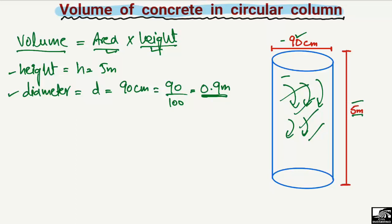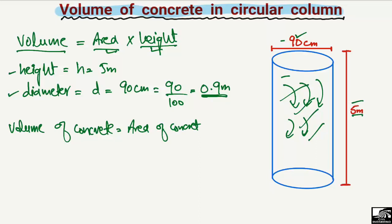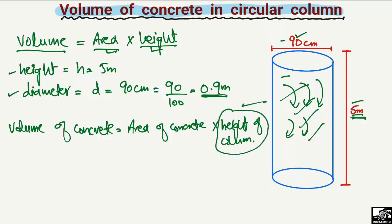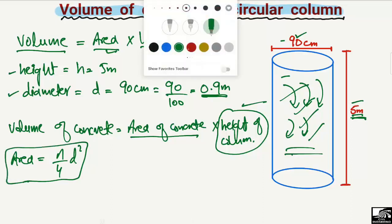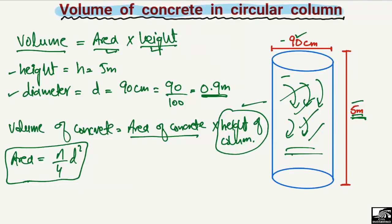Now, the volume of concrete will be equal to the area of the concrete in the column multiplied by the height of the column. The height of the column is 5 meters. To find out the area of the concrete in this circular column, the area is equal to π/4 × d², which is the formula used to find the area of a circular object.